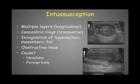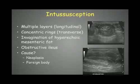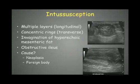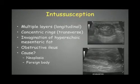Intussusception is mostly seen in young animals, and it creates a secondary mechanical obstruction as nothing will be able to pass through. It has a very typical appearance on ultrasonography with multiple layers. On the longitudinal image it creates multiple layers, and on a transverse image it creates concentric rings — one intestinal loop situated within the lumen of another intestinal loop.